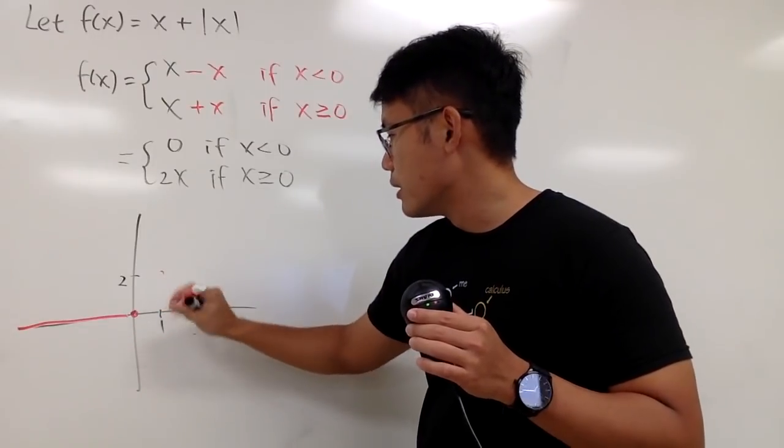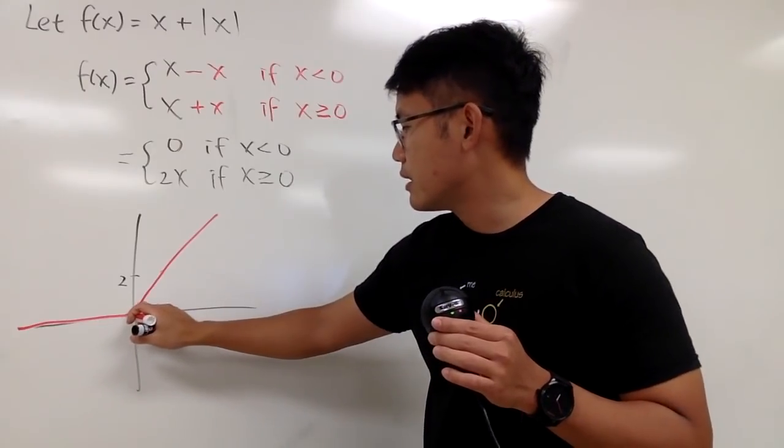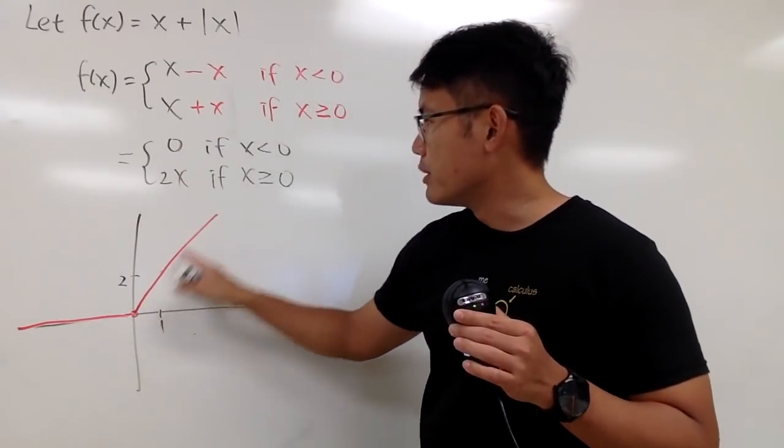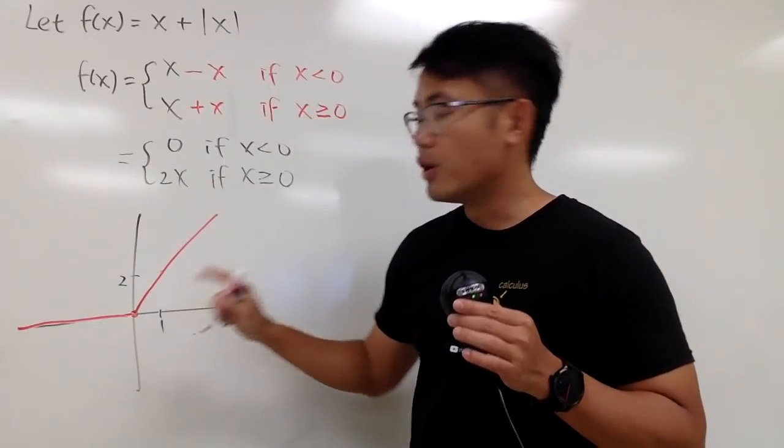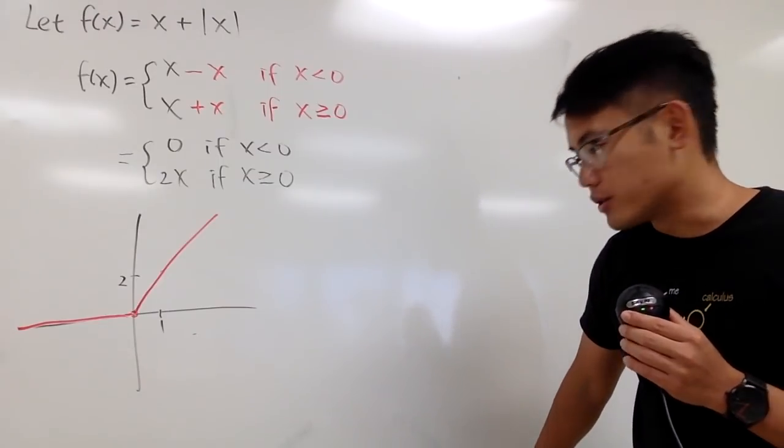So, you can just put the points, and then you can just connect the dots. And that's pretty much it. This part is 0, this part is 2x, and this right here, we do have a closed circle. So, this is the graph for the function.